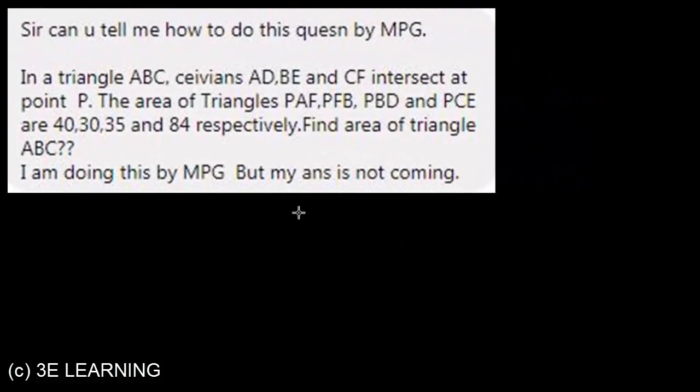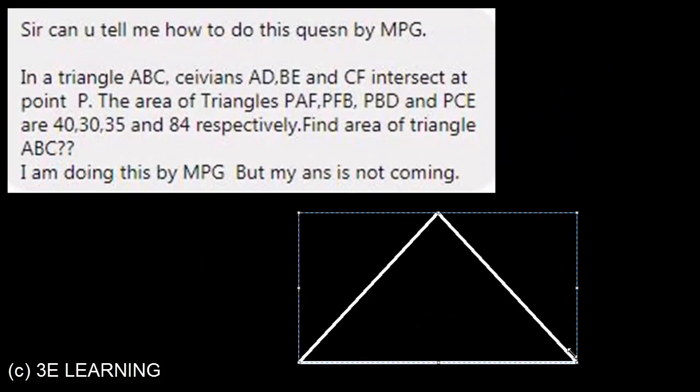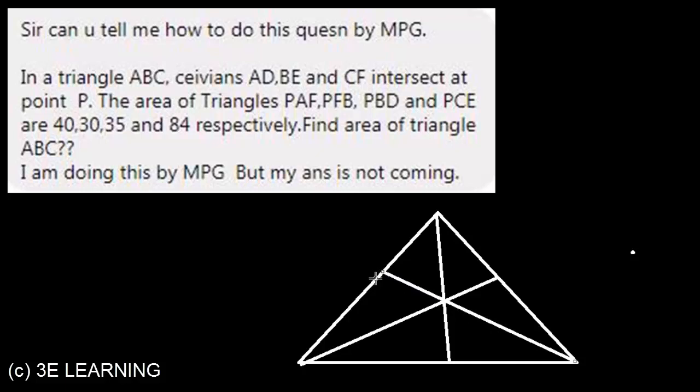First of all, we have to draw triangle ABC with all cevians and all areas. So this is my first cevian, this is my second cevian, this is my third cevian. Now I have to name them and give the values. Say this one is A, B, C, cevian D, AD, BE and CF. Now the areas given are 40, 30, 35. Though in this question, 84 is not required, but I am writing 84.